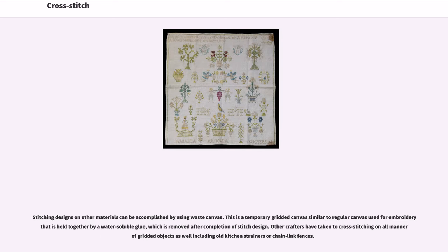Stitching designs on other materials can be accomplished by using waste canvas, a temporary gridded canvas similar to regular embroidery canvas that is held together by a water-soluble glue, which is removed after completion of the stitch design. Other crafters have taken to cross-stitching on all manner of gridded objects, including old kitchen strainers or chain link fences.